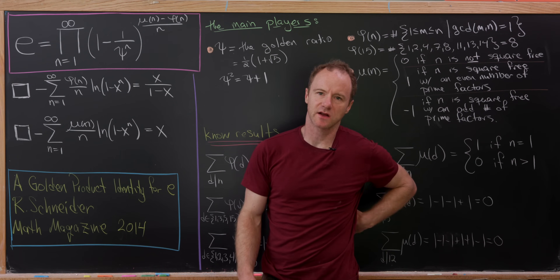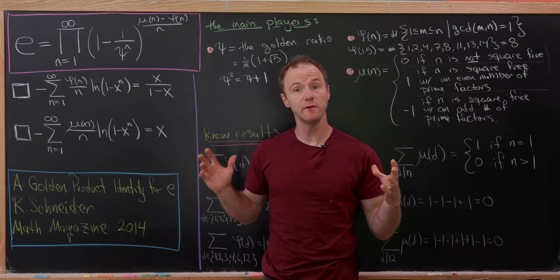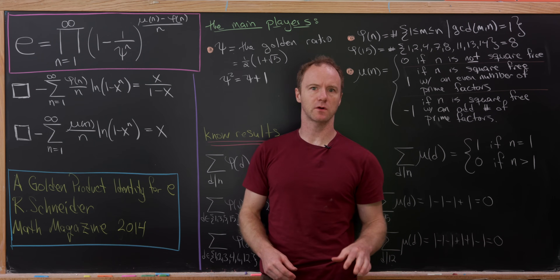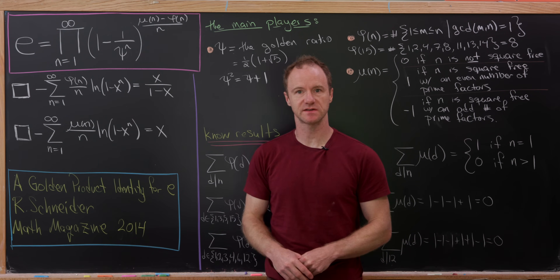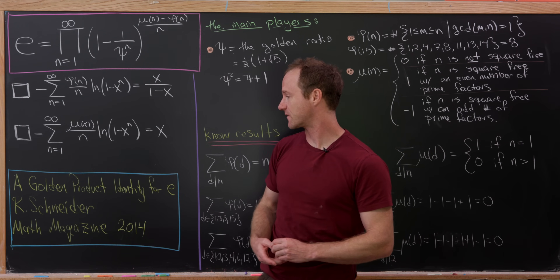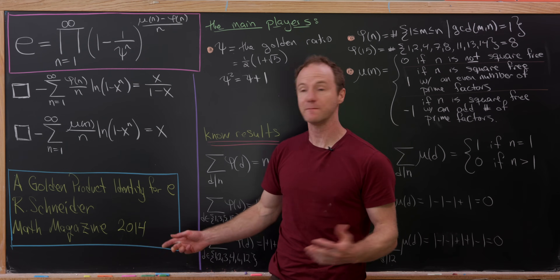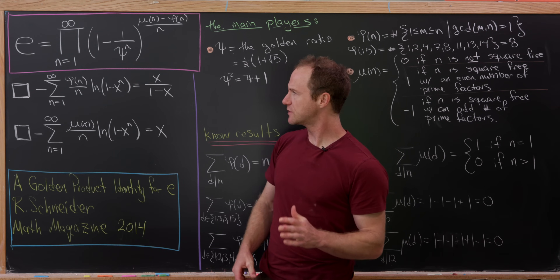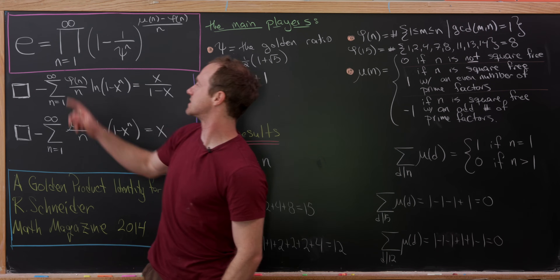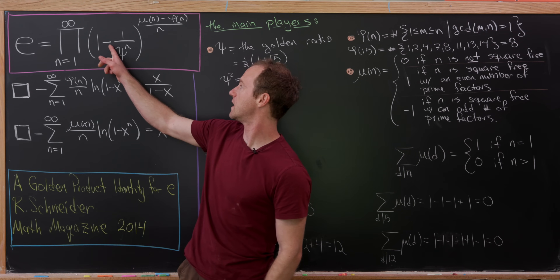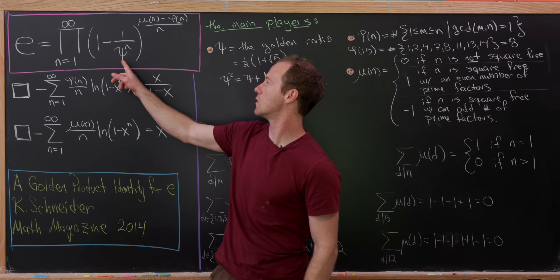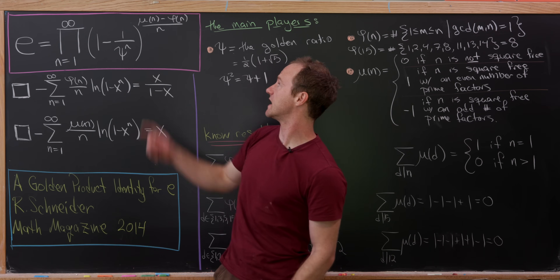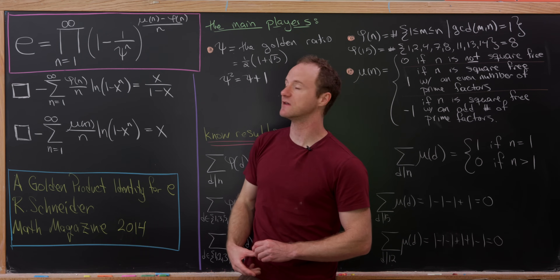Today we're going to look at a really interesting product identity involving two very important constants and then two very important arithmetic functions. This comes from the paper 'A Golden Product Identity for E' by R. Schneider from Math Magazine in 2014. In particular we'll show that e is the product as n goes from 1 to infinity of 1 minus 1 over the golden ratio to the n power, all raised to the mu of n minus phi of n over n.